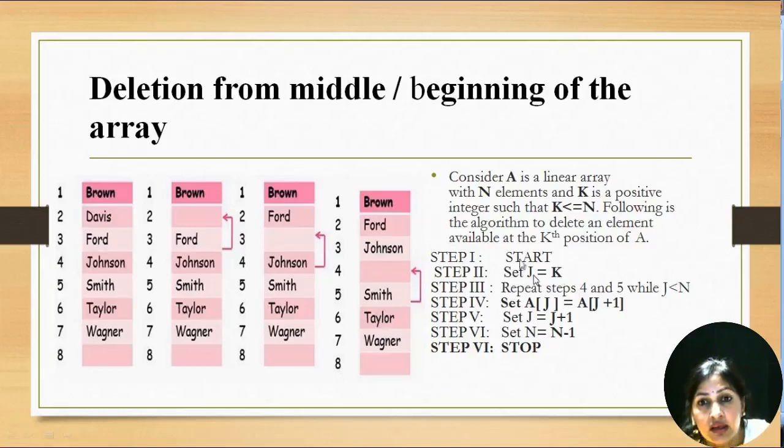So we start moving from the location from where we have deleted the value. So we initialize our counter variable with the value from where we have deleted the value. And we repeat the steps. Because every time we move a value upward, the location of that value becomes vacant. So we have to move all the values upward one by one. So this loop will continue for all the values after kth location. So until the value of j reaches n,